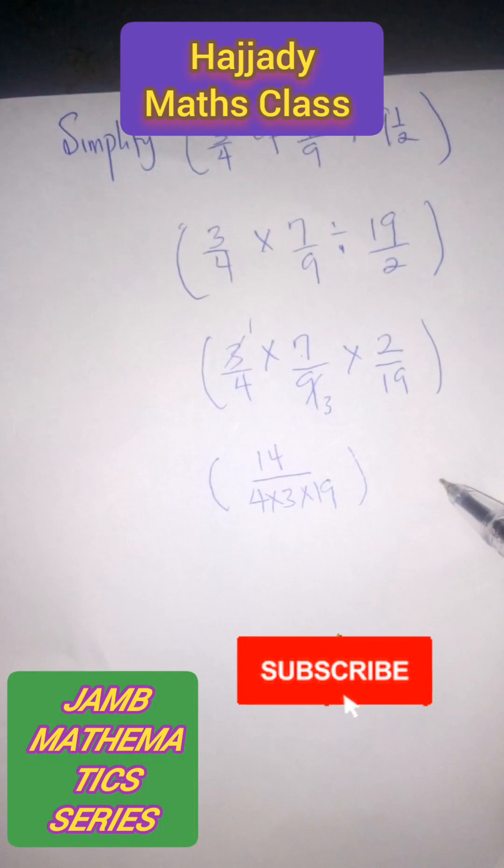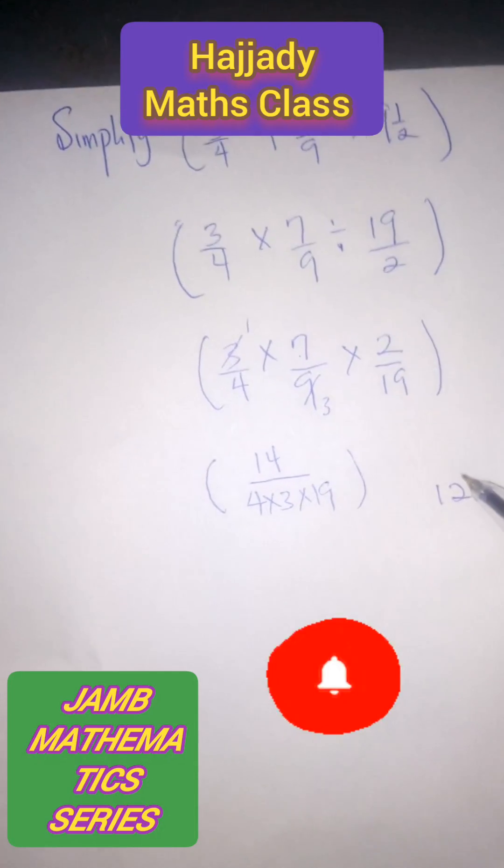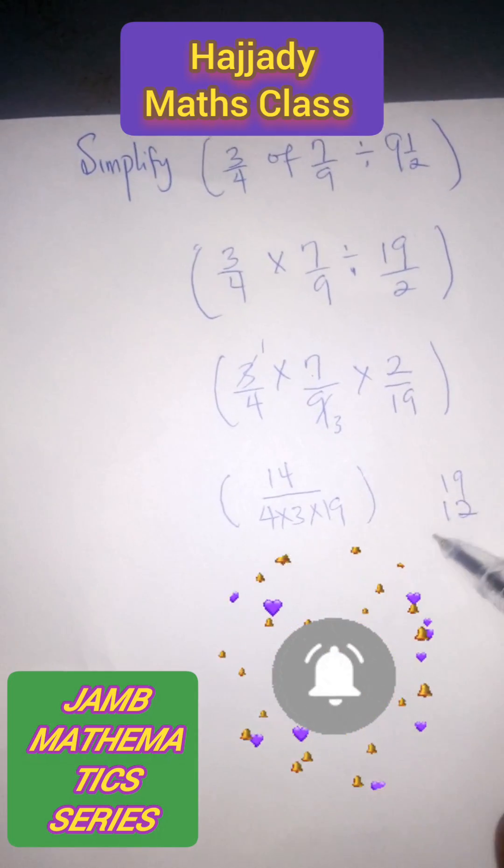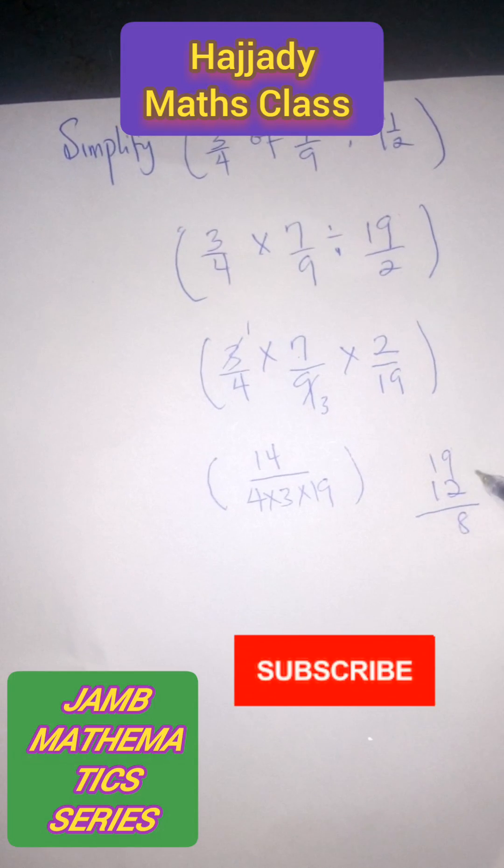And in our denominator we have 4 times 3 times 19. 4 times 3 is 12. Let's multiply that by 19. 2 times 9 is 18, keep 1.